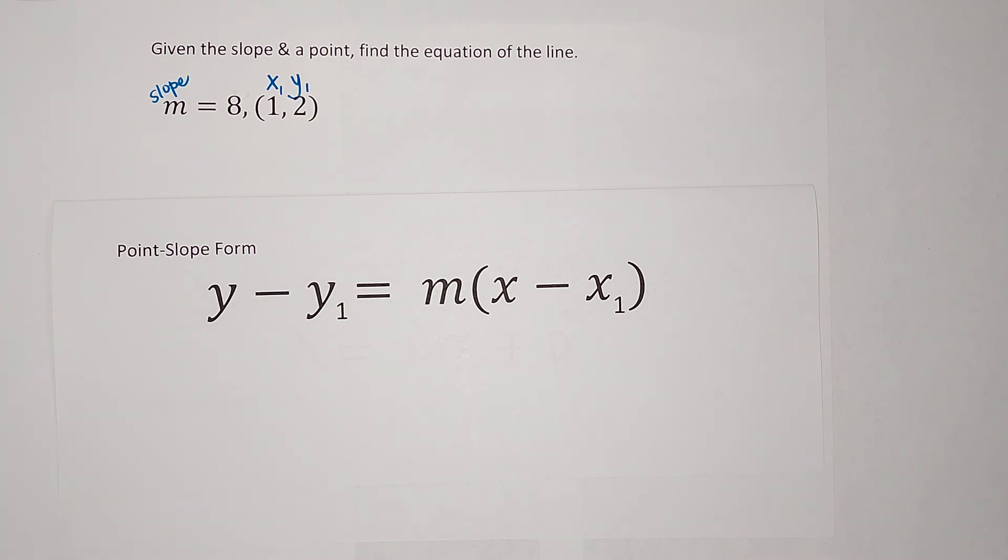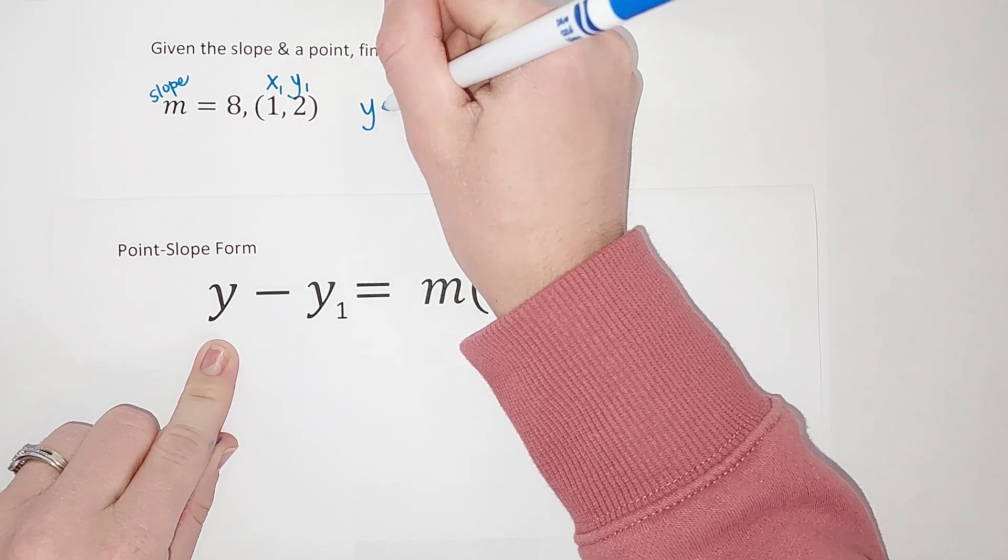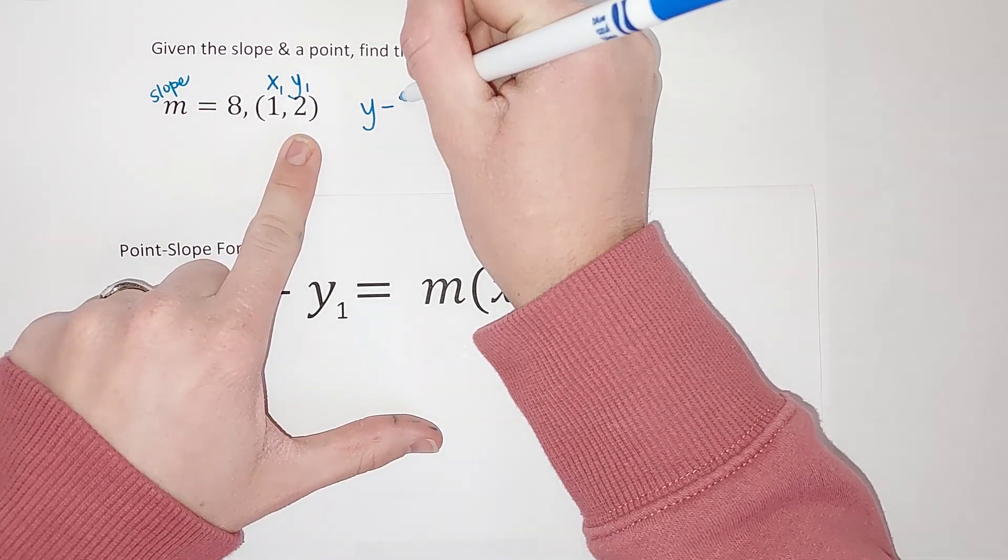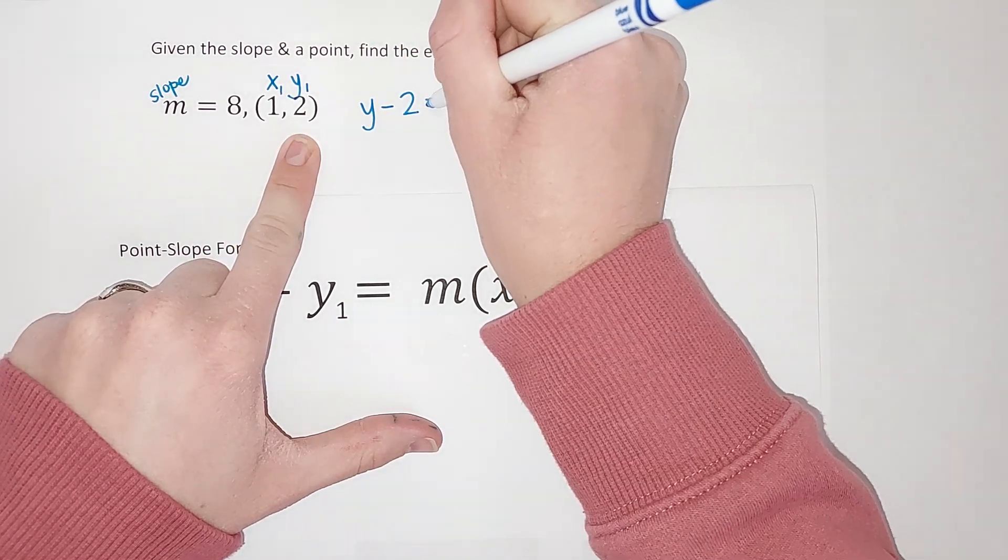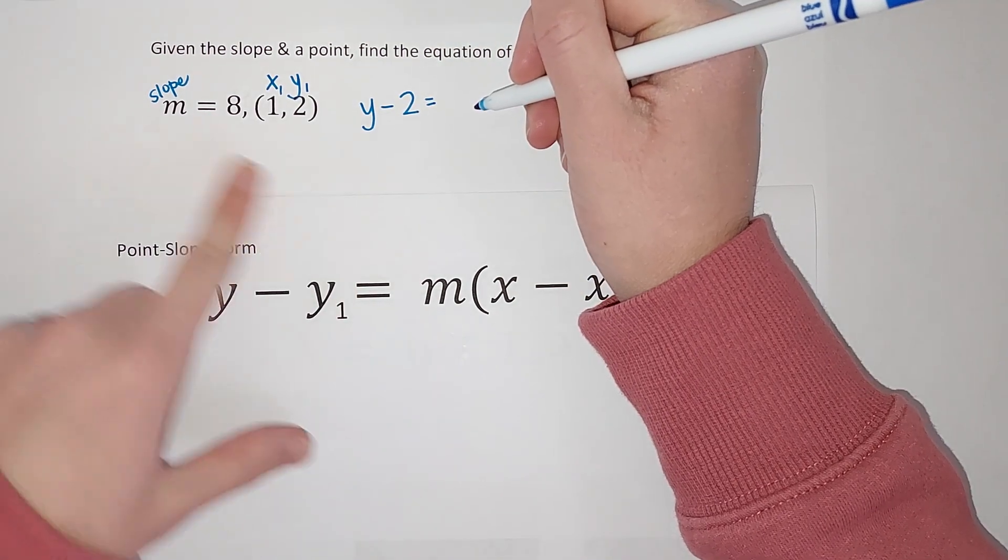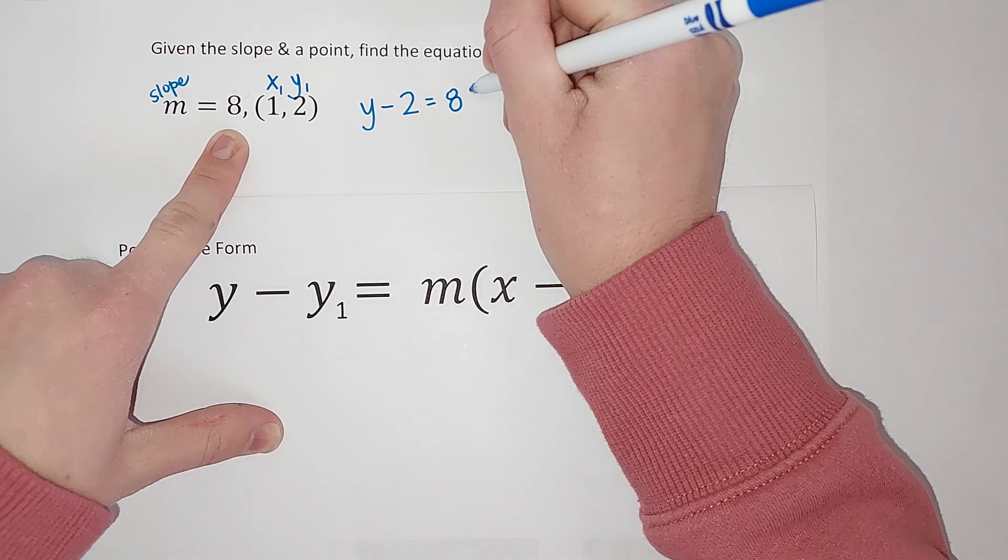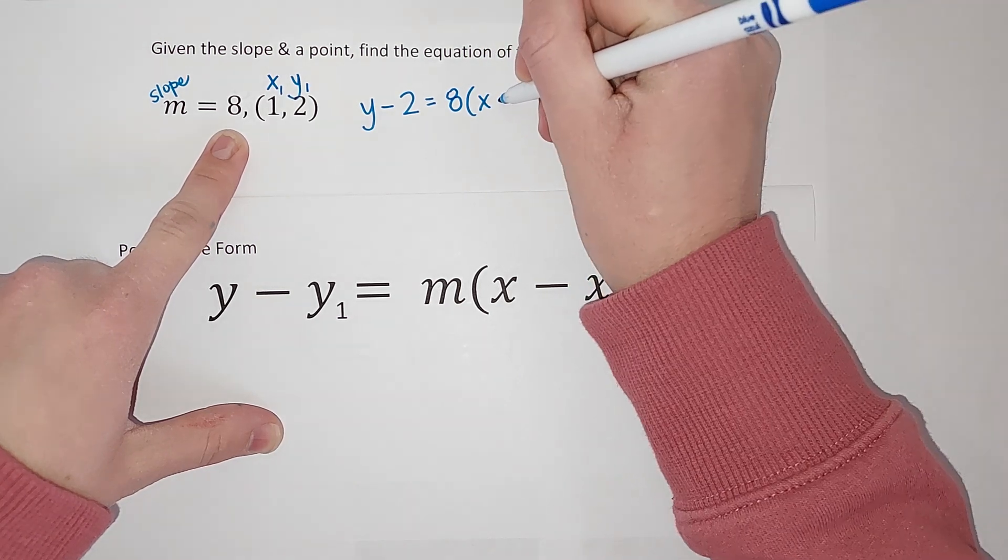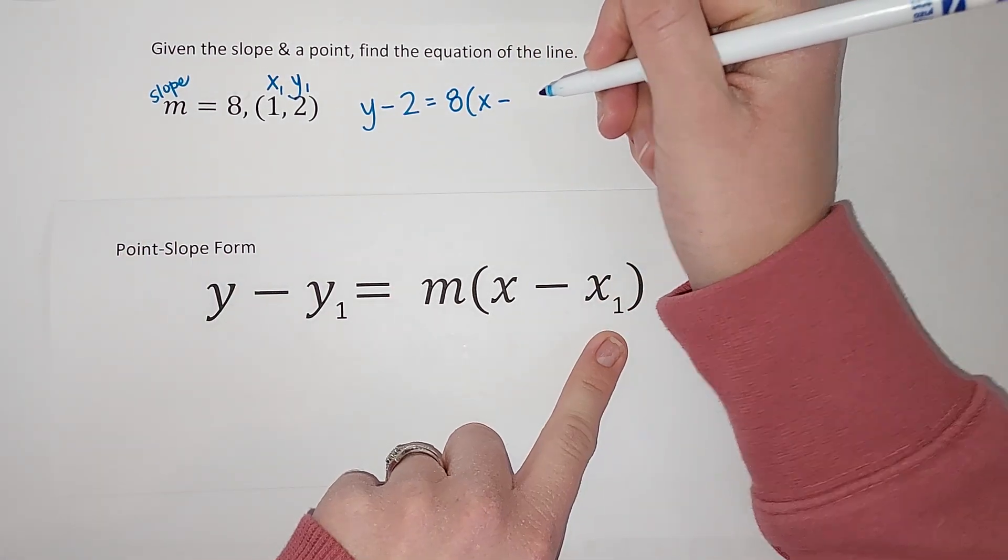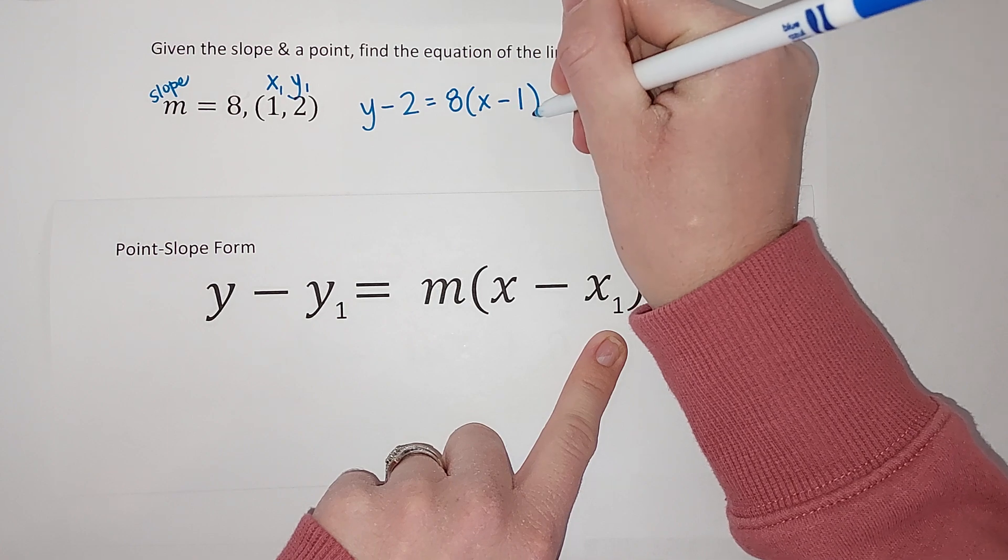Now we are just plugging these in. So this one stays a Y. So I'm going to have Y minus Y1, which is 2, equals M, which is 8, times X minus X1, which is 1.